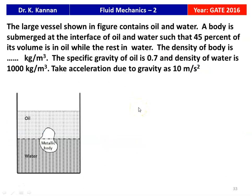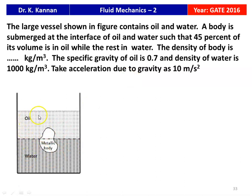The next question is from the 2016 question paper. A large vessel contains oil and water. A body is submerged at the interface such that 45 percent of its volume is in the oil while the remaining 55 percent is in the water. Find the density of the body in kg/m³. The specific gravity of the oil is 0.7 and the density of water is 1000 kg/m³. Take g equal to 10 m/s². The answer is 865 kg/m³.